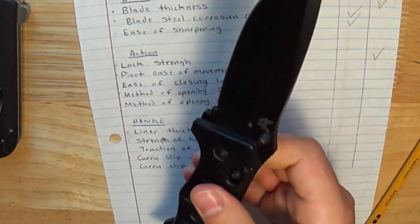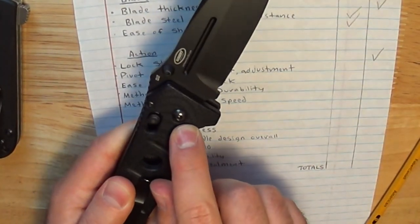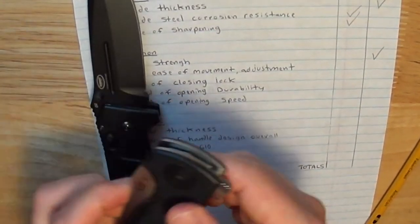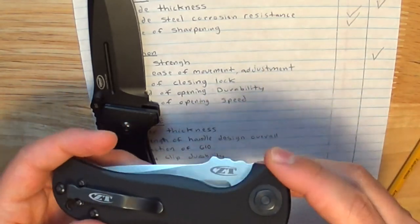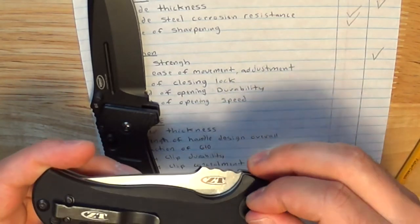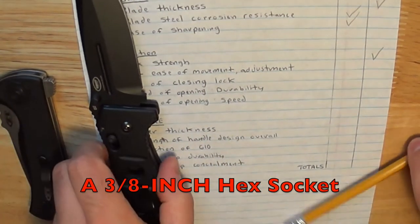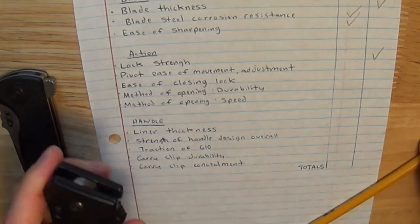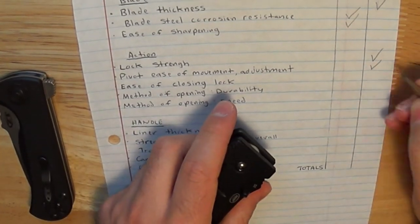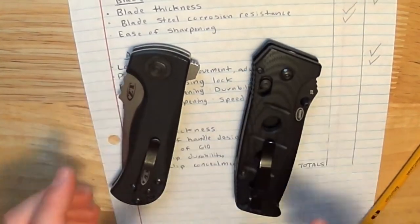Benchmade has phosphor bronze washers in their pivot. It's also a little easier to adjust with your hex key here versus having to buy some kind of bit. So I'm going to give the pivot ease of movement and adjustment to Benchmade based on the adjustment factor, although ZT's pivot technically is quicker because of the ball bearings.